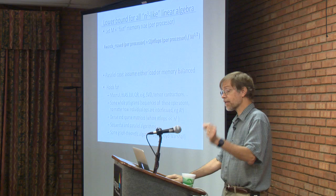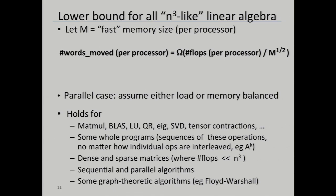That's the lower bound we want to attain for the bandwidth—the number of words moved. But there are two costs: number of words moved and latency, the number of messages. The simplest lower bound on number of messages: suppose you always send the largest possible messages. Pack all the words into the largest message size—your whole local memory. This lower bound is just a factor of M smaller than the bandwidth lower bound. That's our goal for all these algorithms: hit these two lower bounds. This won a best paper prize in 2012.